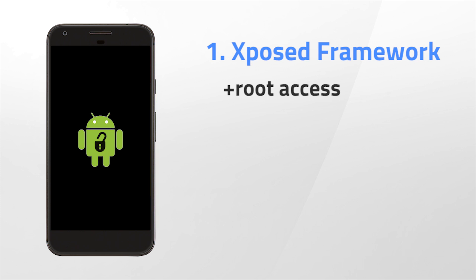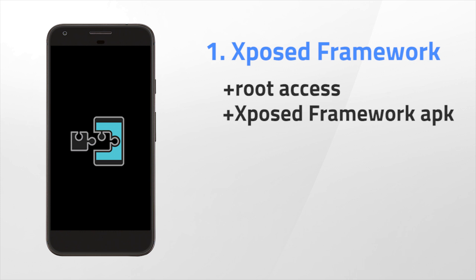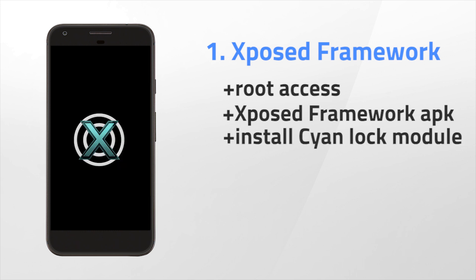If you have a rooted device, download the Xposed Framework APK from the description and install the framework to the system. Just installing the framework alone will not enable the 6x6 pattern lock — Xposed Framework is more like a mod installer. The real mod that gives you the 6x6 pattern lock is called CyanLock, and it is available in the download section of that app.